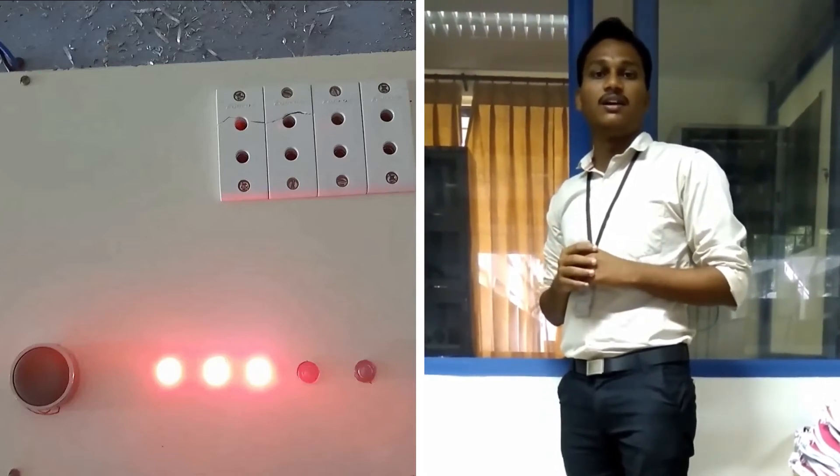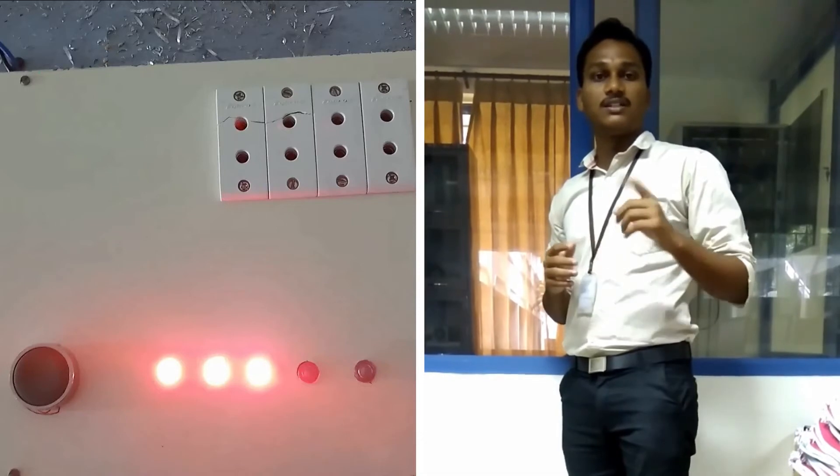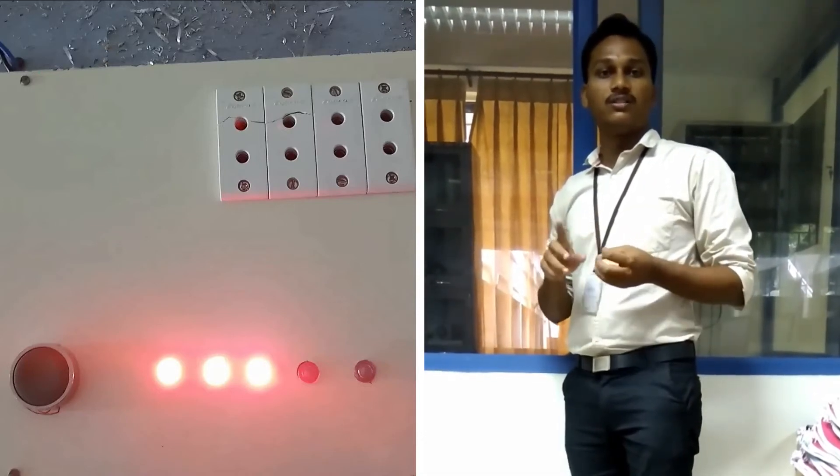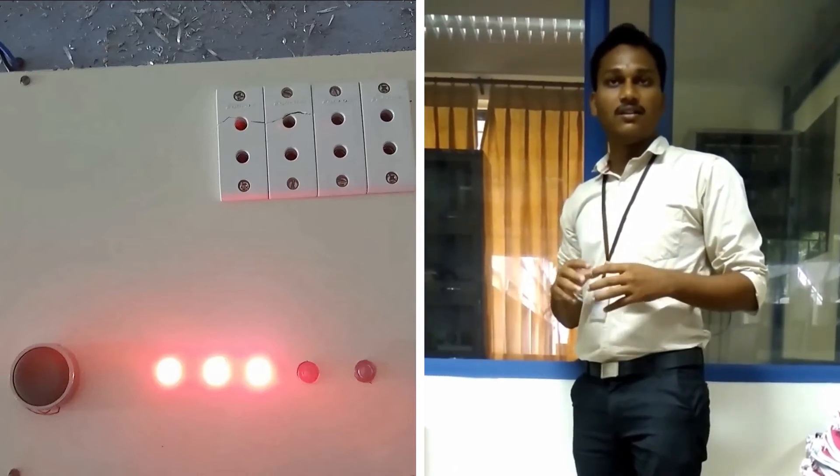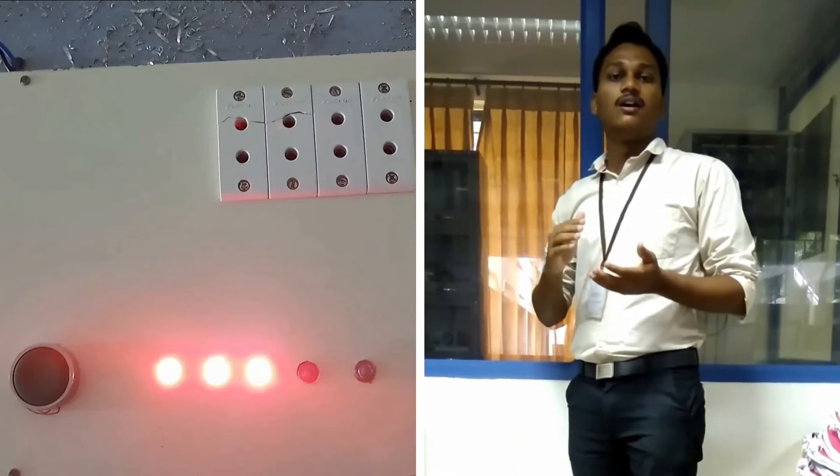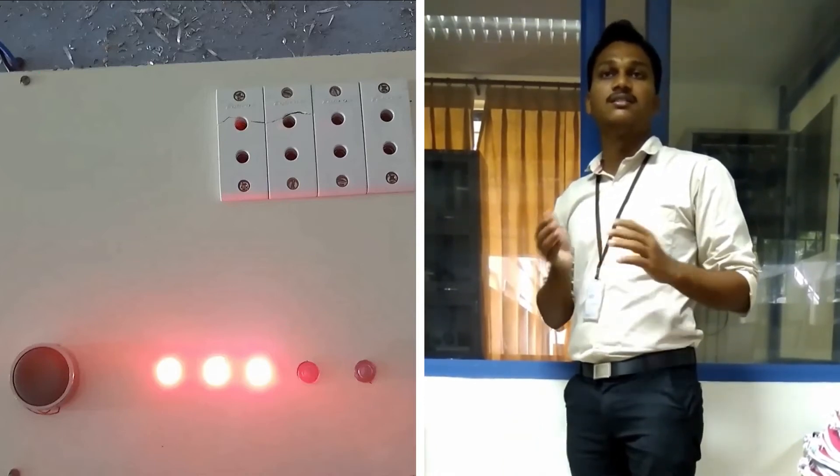These three LEDs indicate: first LED indicates microcontroller is on or off condition. Second LED indicates first DCV is on or off. Third LED indicates second DCV is on or off.